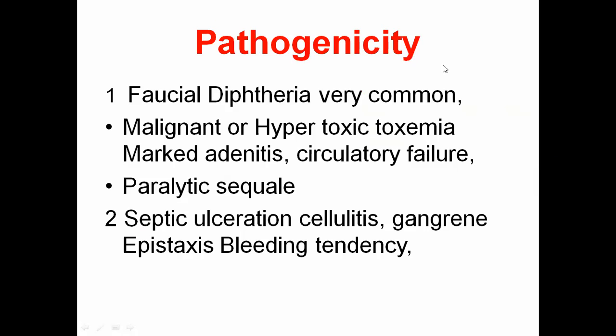Moving to faucial diphtheria — the very common form with the classical pseudomembrane signs and symptoms. The next is malignant or hypertoxic diphtheria: toxemia, marked adenitis, and circulatory failure. Malignant means there is unusual formation — an excess accumulation of dead cells.